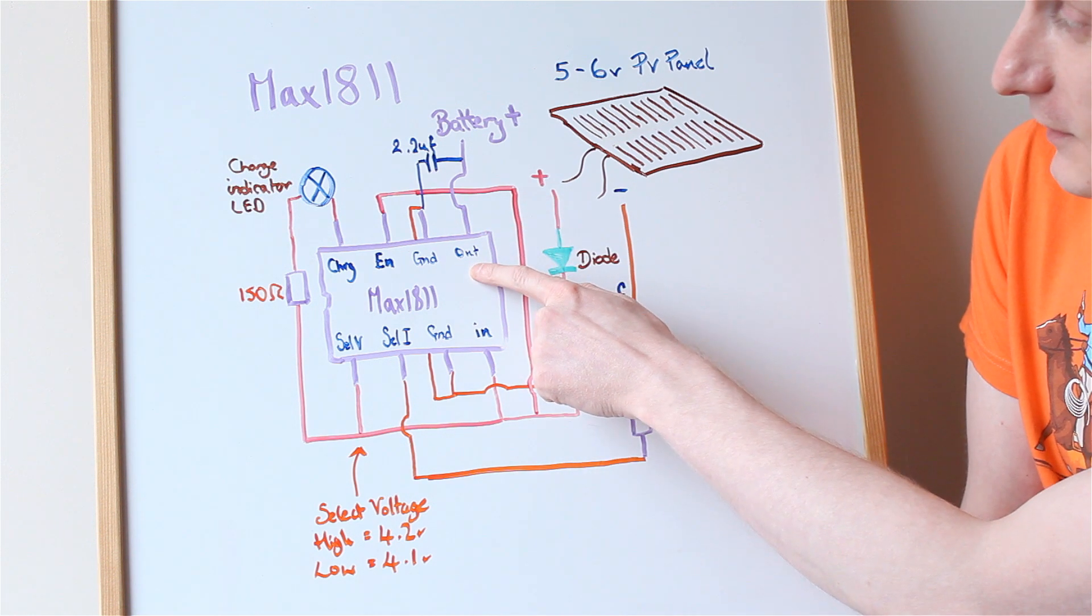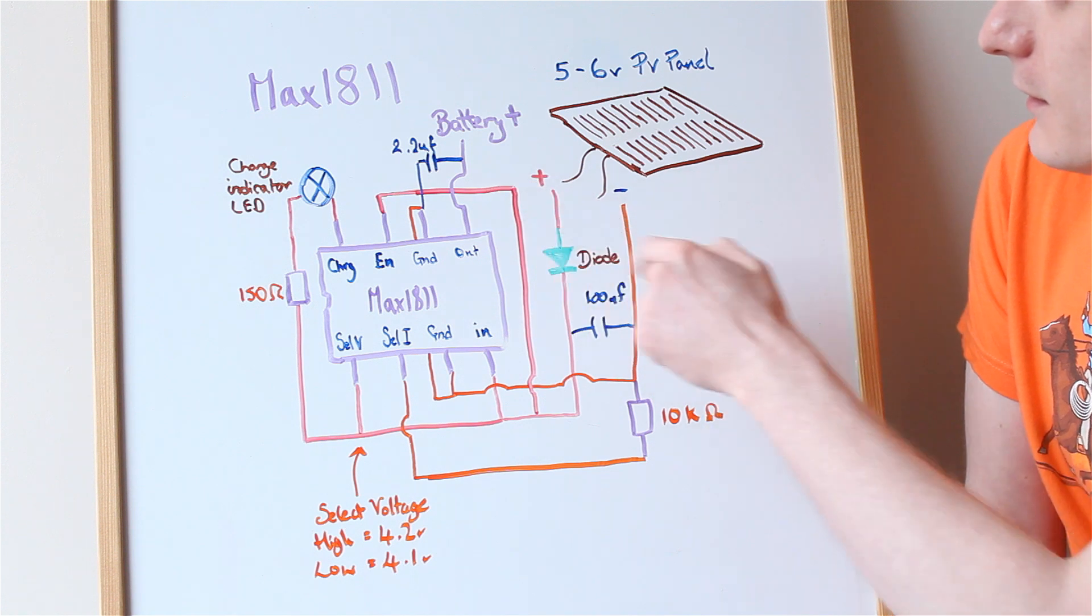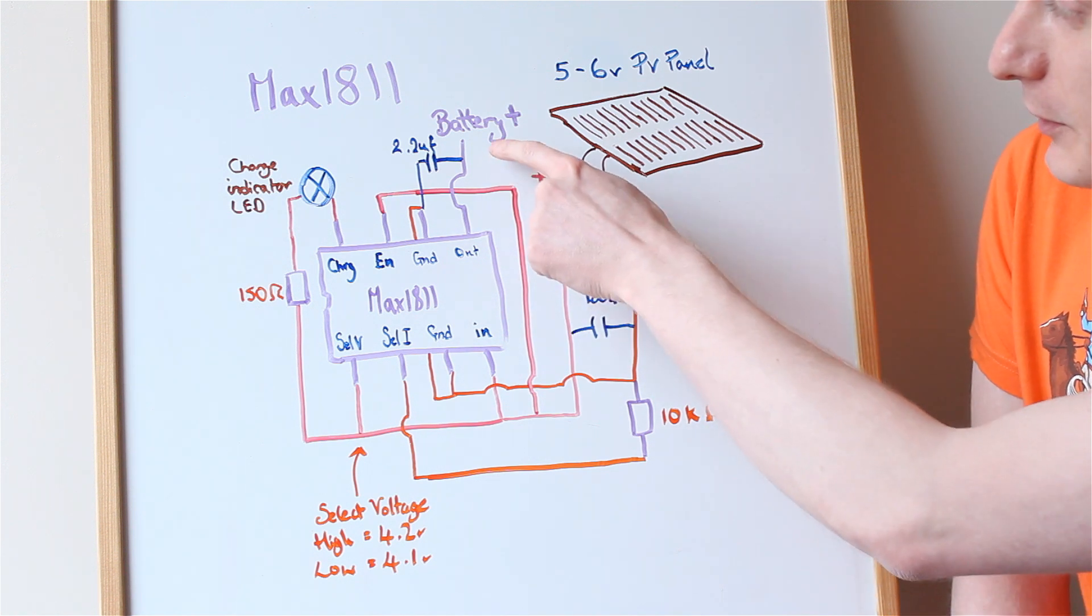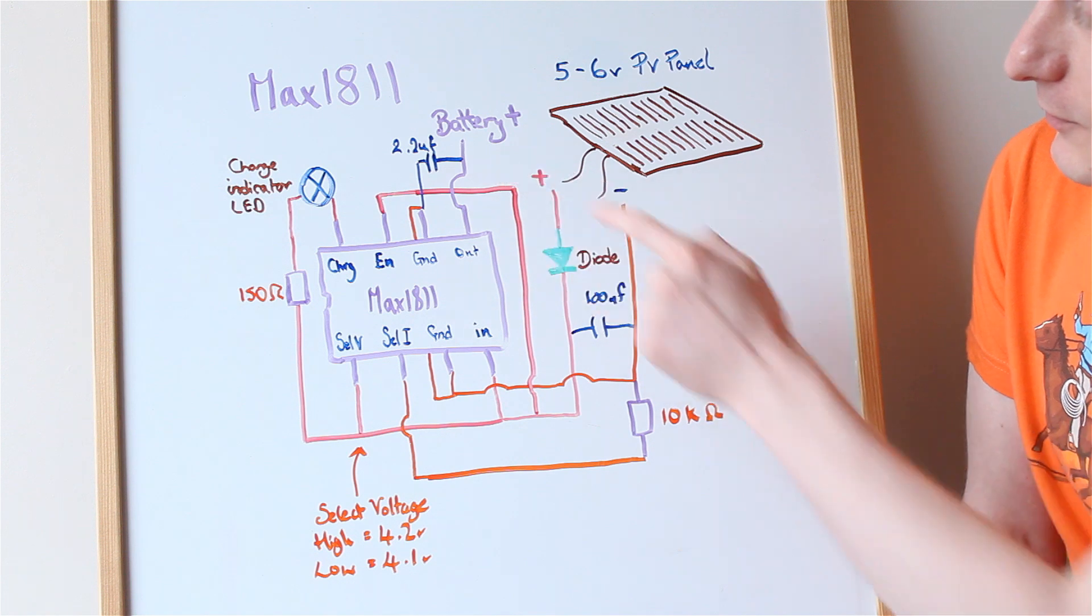And then you've got OUT here, which goes straight to your battery, and so it's showing the same ground as the solar panel, but it's taking the positive terminal from there.